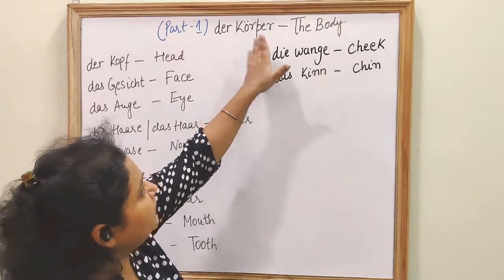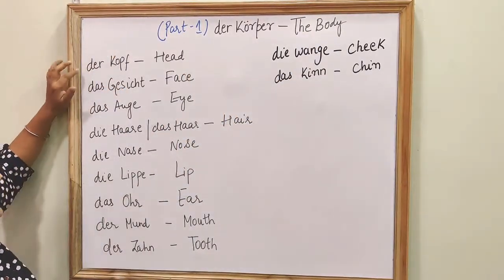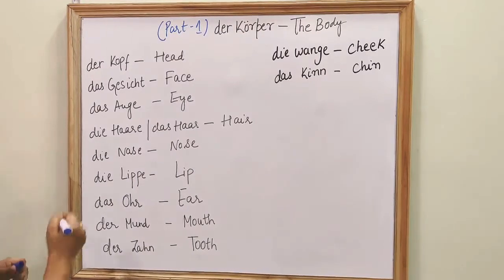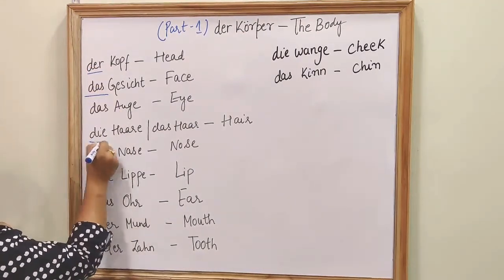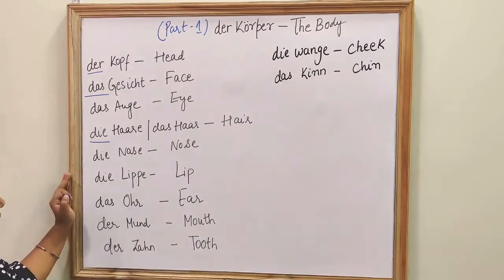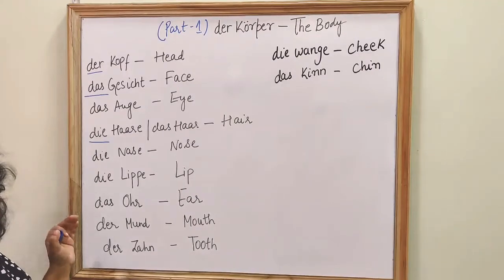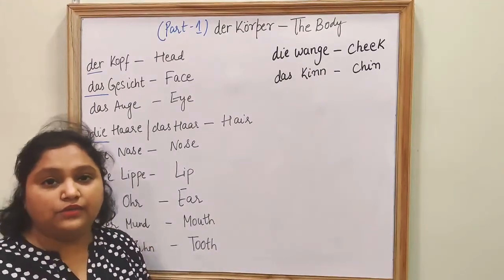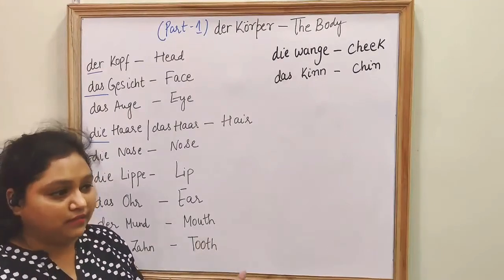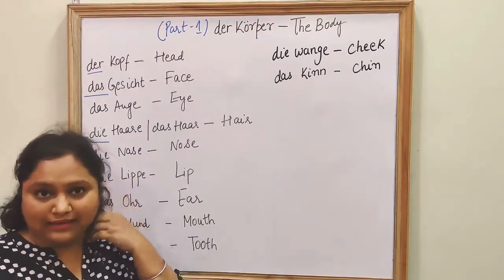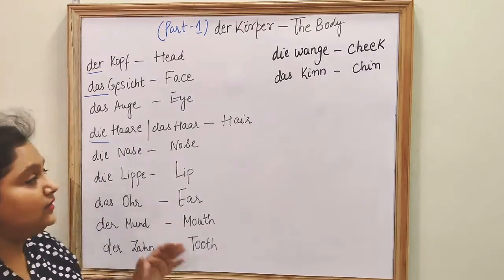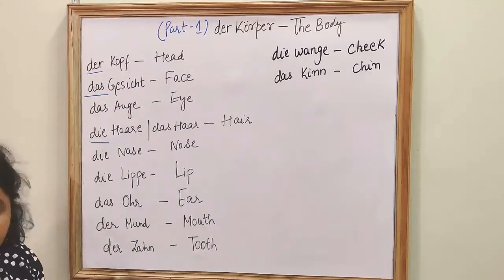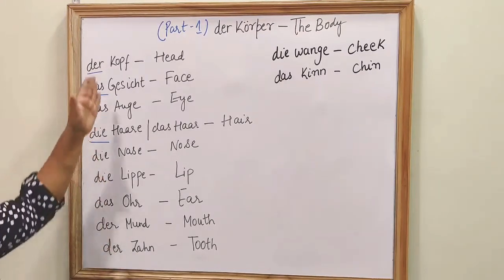So 'der Körper' is the body. Before starting, let me just tell you that I have written the articles here, which is 'der', 'das', 'die'. I have written this just to tell you that it is always beneficial for you to do the noun with the articles. So in German, as we all know, all nouns have three articles: 'der', 'die', 'das', plus the plural article as well. But here we are only focusing on the singular ones. It is always advised that you do the nouns with the articles.